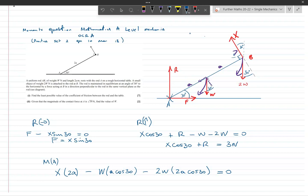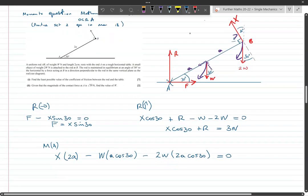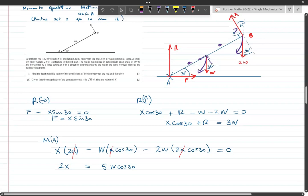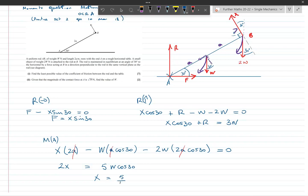That's going to get us X in terms of W pretty readily. If I rearrange that, well first of all A cancels, which it often does with these things because it's a moments equation. I'm going to get 2X equals 5W cos 30, and cos 30 is the square root of 3 over 2, so I'm going to get X is equal to 5 over 4 times the square root of 3W.